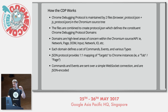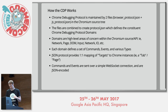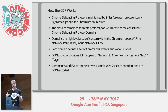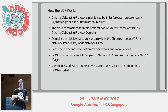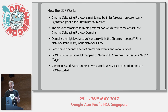Those two files are combined and define the high-level API targets, or 'domains' in the Chromium naming scheme. Each domain defines commands, events, and types. That JSON protocol provides a one-to-one mapping for targets you manage through the Chrome Debugging Protocol. You can connect to each one — if you're familiar with Chrome DevTools, we're doing the exact same thing, just programmatically with Go instead of pointing and clicking. Commands and events are sent over a simple WebSocket connection as JSON-encoded types.